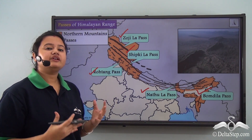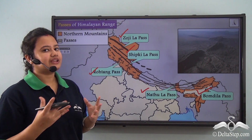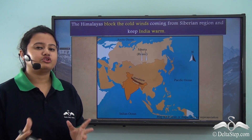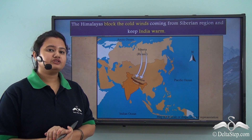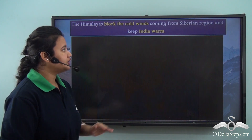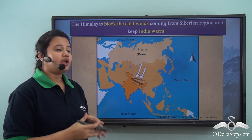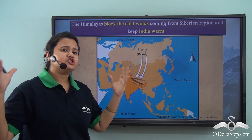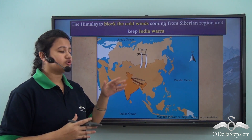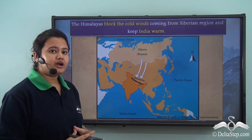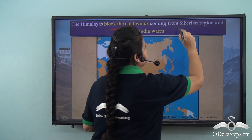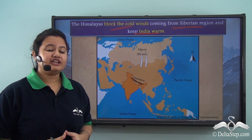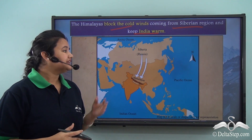Apart from acting as the natural border of India, the Himalayas protect the country from cold chilly winds coming from the Siberian region towards central Asia. These winds cannot enter India because of the presence of the giant Himalayas, which stand as a shield and block the flow of these winds. So the Himalayas block cold winds coming from the Siberian region and thereby keep India warm, saving it from bitter cold during the winter months.